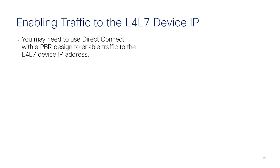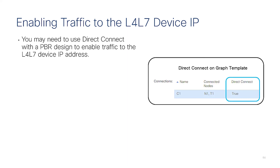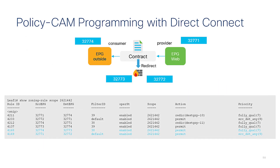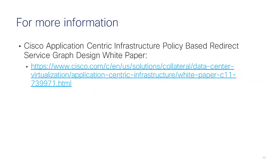Direct Connect is an option needed when you want to send traffic to the firewall's IP address over an interface used for service graph redirect. It configures a contract to allow traffic to the firewall itself, since normally traffic reaches the firewall via redirect rather than direct routing. This option modifies the policy CAM programming to add a permit entry between the implicitly created EPGs and the source EPG. For more details, refer to the white paper which covers all aspects of policy-based redirect.